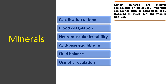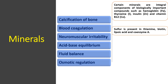Some minerals are integral parts of biologically important components. For example, hemoglobin, which is essential for oxygen and carbon dioxide transportation, contains iron. Thyroid hormone thyroxin contains iodine. Insulin cannot function without zinc. Vitamin B12 contains cobalt. Sulfur is present in different vitamins like thiamine, biotin, lipoic acid, and coenzyme A, where it plays a significant role.